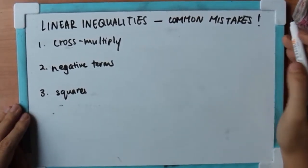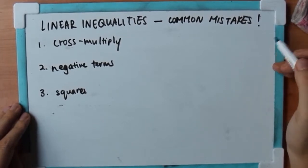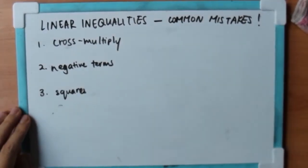Okay, today I'm going to talk about linear inequalities and the common mistakes made. First one is cross-multiply.